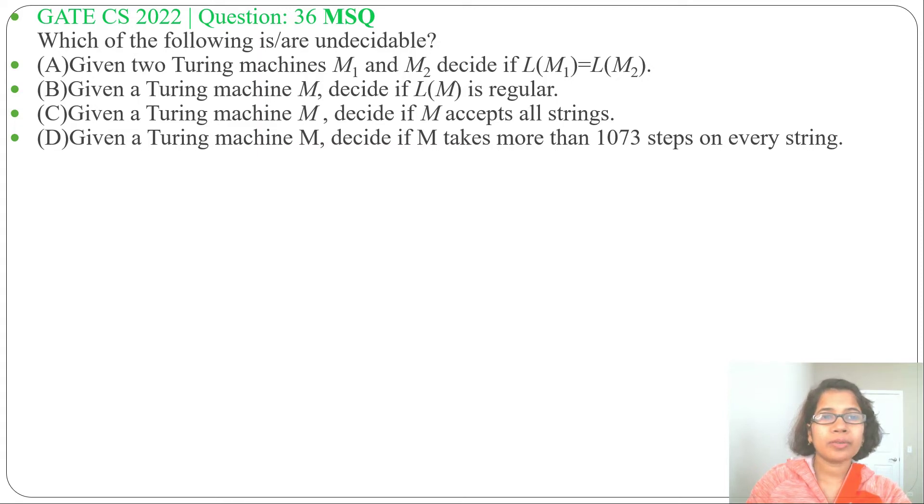Hi, let's solve one previous question of undecidability TOC. This question was asked in GATE CS 2022 question number 36. It is a MSQ which of the following is or are undecidable, and four options are given.